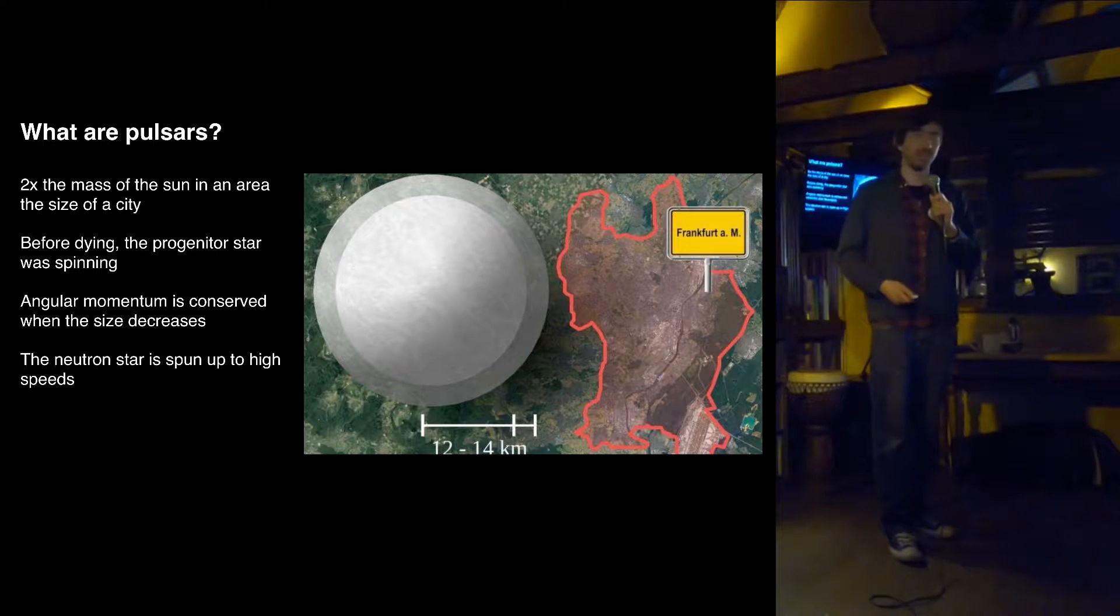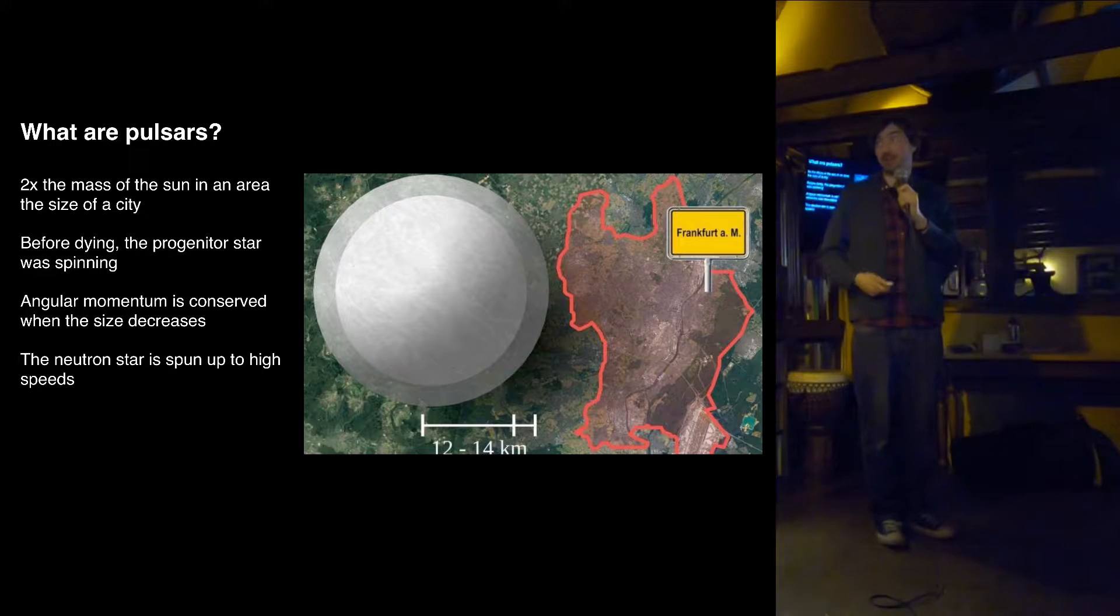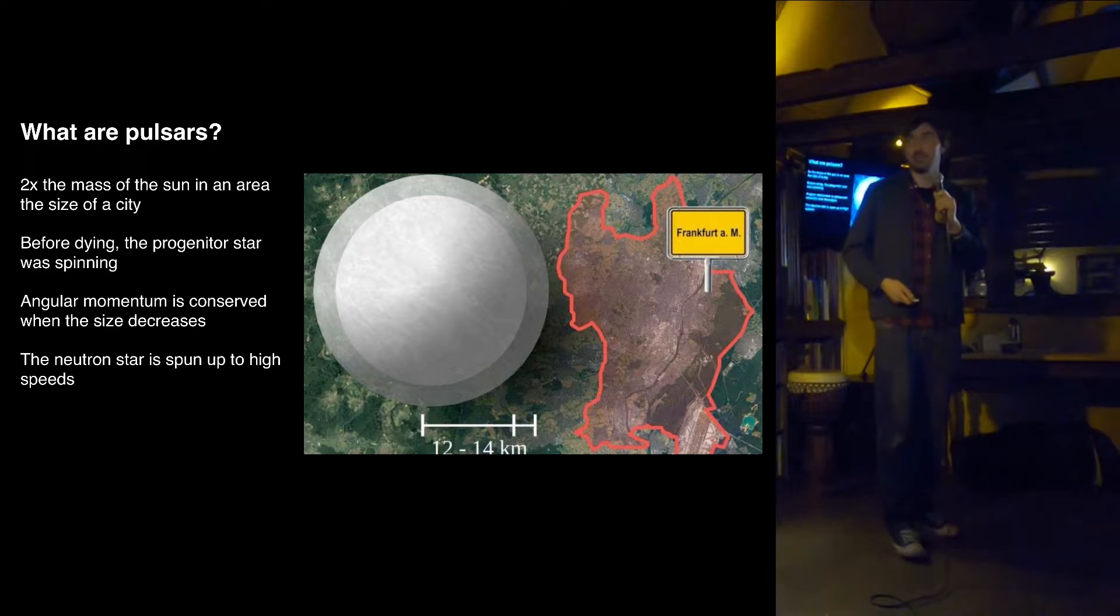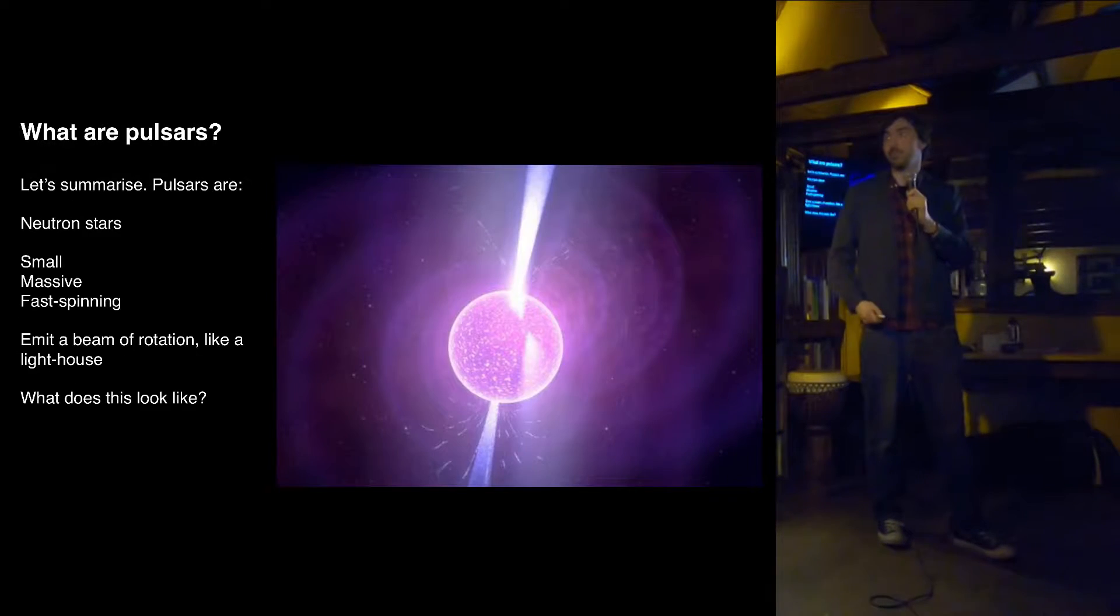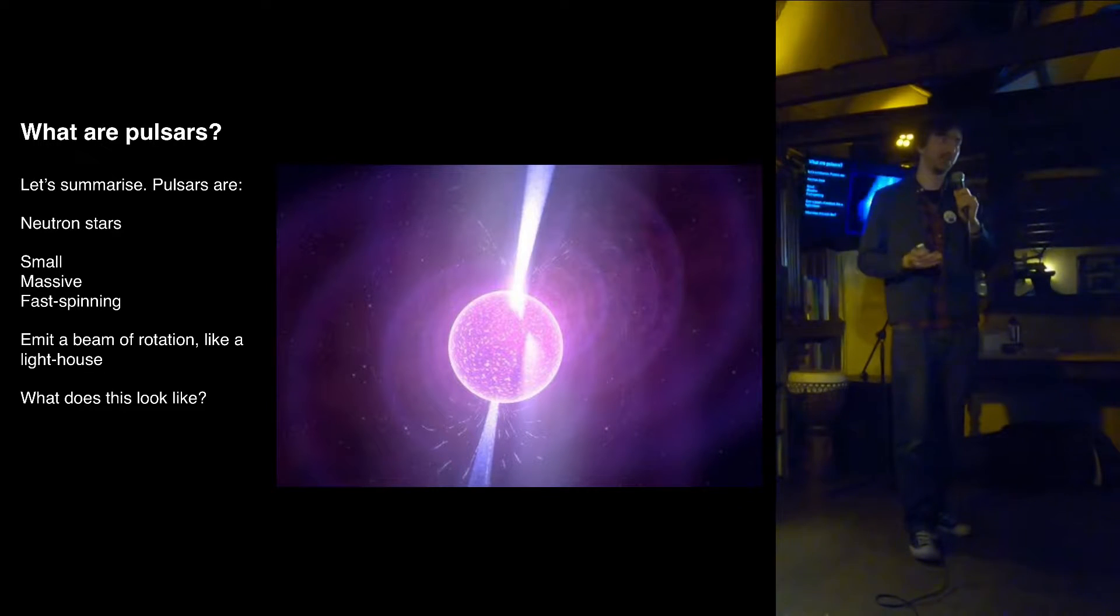So pulsars are extreme objects. They weigh about two times the mass of the sun. They're crushed into an area about the size of Frankfurt. And they spin at least once per second, but we can see later that could be much more. So these are really extreme conditions. This is a lot of mass in a small area spinning very, very fast. And very important, they also emit these beams out of the magnetic axes. These sweep over the Earth like a lighthouse, and we see them pulsing on and off. And I can show you what that looks like.